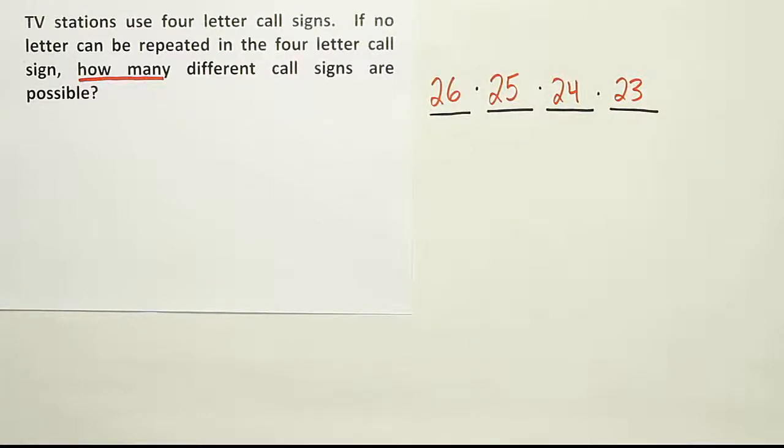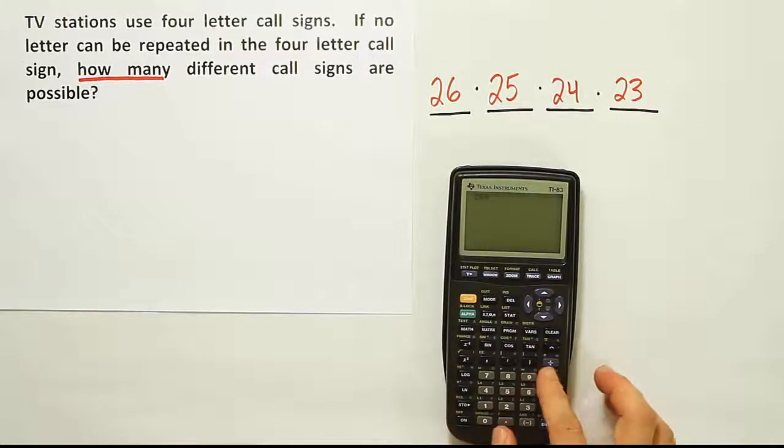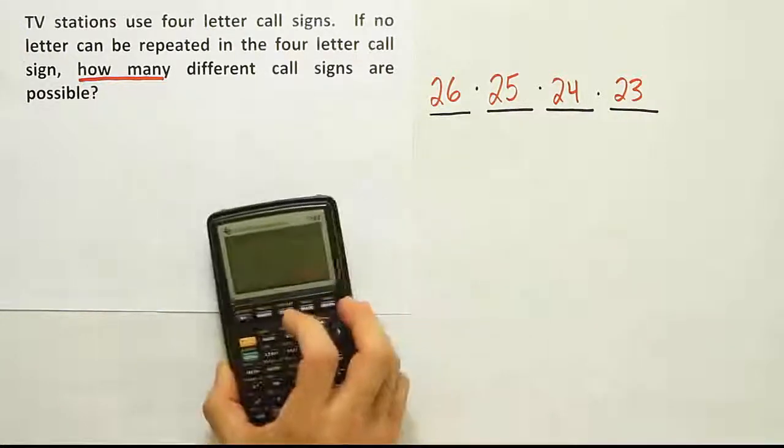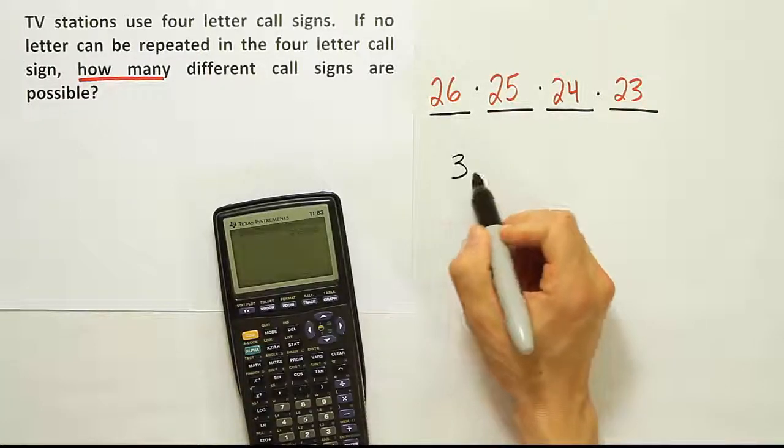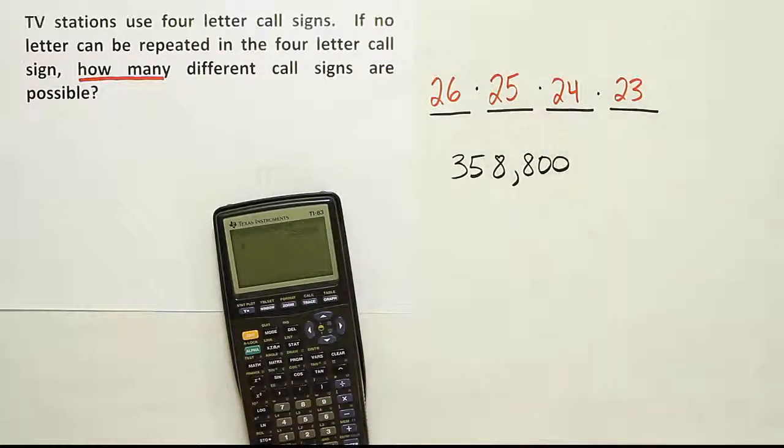Okay, so let's do the calculation here to see what the answer is then. It'll be 26 times 25 times 24 times 23. And when you're finished, you get this rather large number of options. It's 358,800 different unique TV station four-letter call signs.